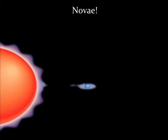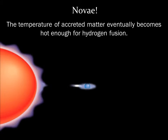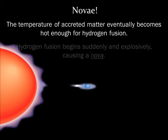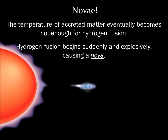The material from the companion star is mainly hydrogen gas. As it spills into the accretion disk, it forms a shell of hydrogen on the white dwarf. Eventually, the accreted material is hot enough for hydrogen fusion. The hydrogen fusion begins suddenly and explosively, causing what we call a nova. A nova can shine as brightly as 100,000 suns.